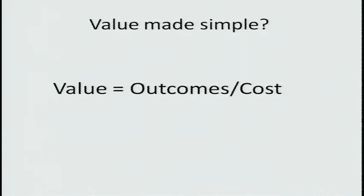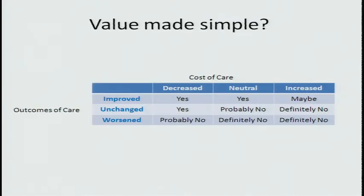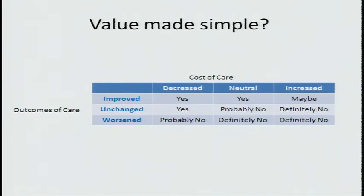It's important to recognize that there are a bunch of things we can look at under outcomes and a bunch of things under cost, particularly from whose perspective. But if we accept that this is a reasonable way to think about things, we can create a simpler matrix where outcomes of care are on one side and cost of care on the other. Outcomes can improve, remain unchanged, or worsen. Cost can decrease, remain the same, or increase. Based on evidence, you could assign a given intervention, treatment, or test into one of these nine cells, which would also inform whether or not you should implement it.